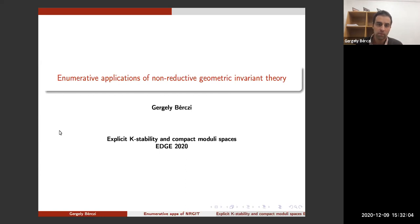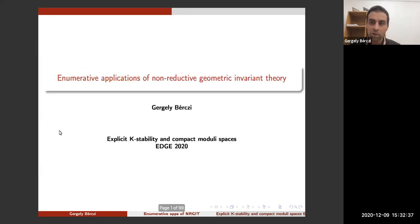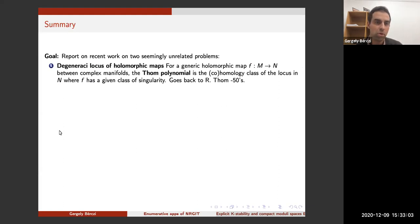Our last speaker this afternoon is Greg Bergsy, who will tell us about enumerative applications of non-reductive GIT. I guess everybody is a little bit tired of non-reductive GIT by now, so many thanks for the invitation and the opportunity to give a talk here. I would like to thank Vicky and Eloise for the nice introduction and explaining the background. I will certainly rely on the talks, but I will try to explain as much as possible. Because this is the third day of an online workshop and it's quite late in the afternoon, I feel I should start with some summary and say something interesting, not to lose too many people.